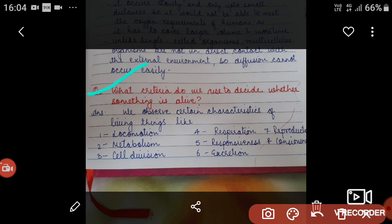If that thing is reproducing, we can say that thing is alive. If it is having some consciousness in the body, we can say that thing is alive. So these are the few criteria that help us decide whether something is alive or not. Thank you so much for watching.